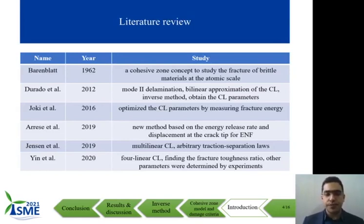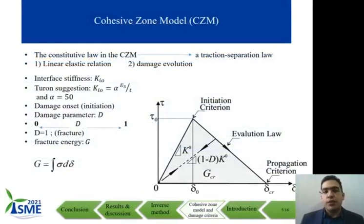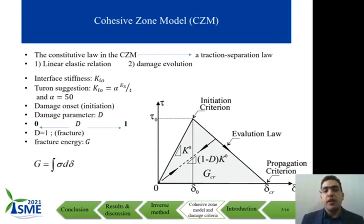Jotti, in 2016, optimized the cohesive law parameters by measuring the fracture energy. Yin et al., in 2020, proposed and developed a four-linear cohesive law, which is novel for finding the fracture toughness ratio. However, other parameters were determined by experiments. The CZM is an accurate method for prediction of the delamination process in laminated composite materials. The constitutive law in CZM is based on the process of interlaminar fracture at the interface where a crack may initiate. The CZM is divided into two parts. In the first part, the linear elastic relation between traction and separation is modeled, and the slope of the first part is an important parameter for description of the cohesive law. It is referred to as the interface stiffness and is represented by K0.